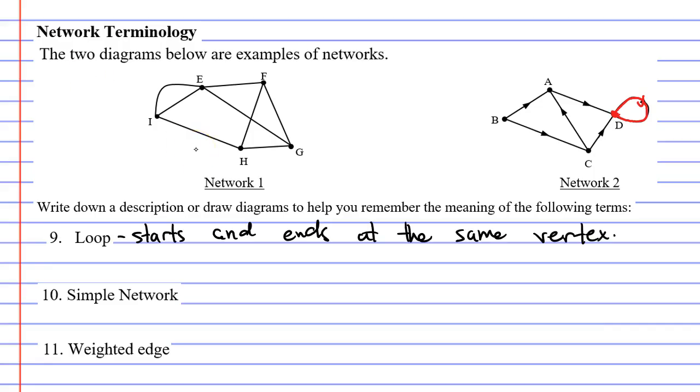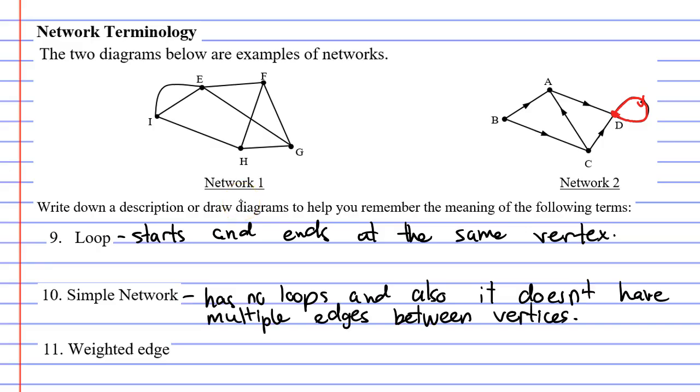Next we'll talk about what is called a simple network. A simple network has no loops and also it doesn't have multiple edges between vertices. So what do we mean by that?